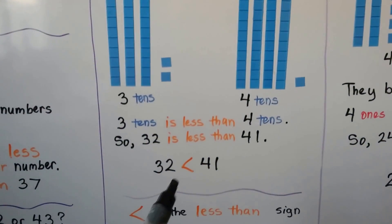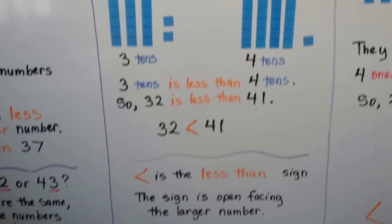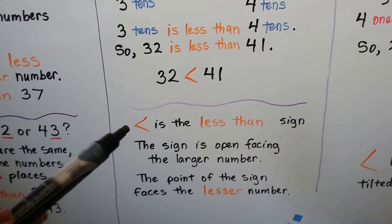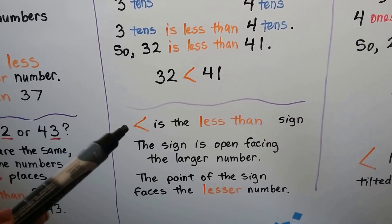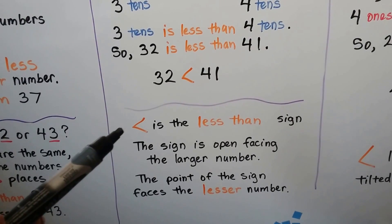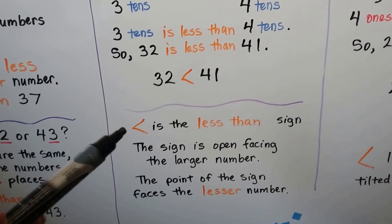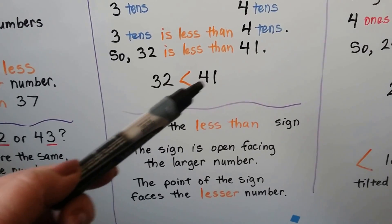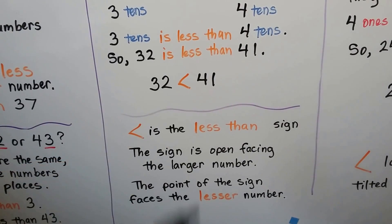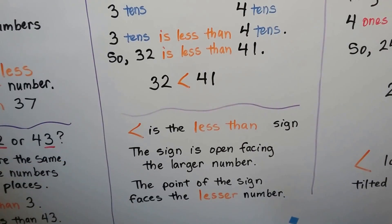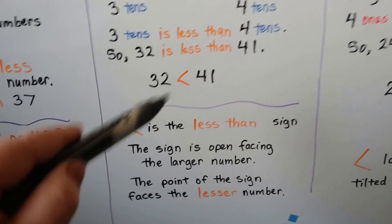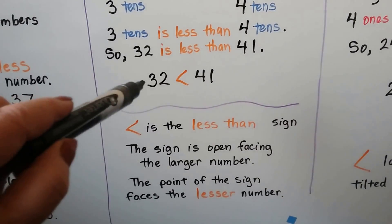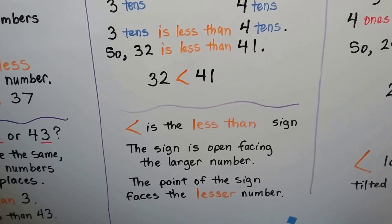Here's the symbol for less than. The sign is open facing the larger number, and the point — this little tip right here — is facing the smaller number, the lesser number.